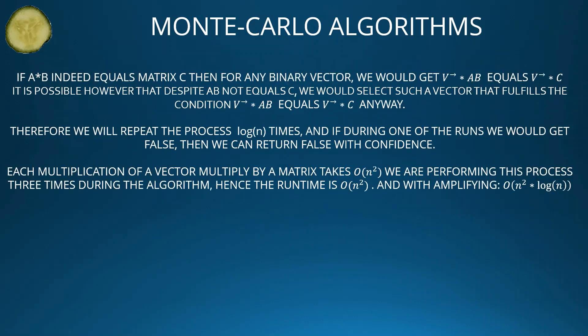If A multiplied by B indeed equals matrix C, then for any binary vector we get that v · AB equals v · C. It is possible, however, that despite AB not actually equaling C, we might select a vector that satisfies the condition v · AB = v · C anyway. Therefore we repeat the process log n times, and if during one of the runs we get false, we can return false with confidence.